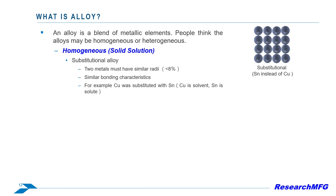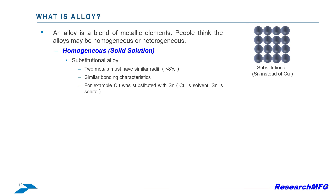For example, bronze and brass are substitutional alloys, where copper atoms are replaced by tin or zinc atoms.